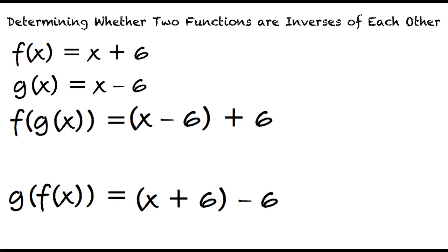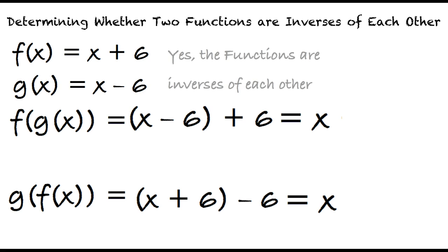To find out whether these functions are inverses of each other, we need to simplify each equation. Negative 6 plus 6 and 6 minus 6 both equal 0. So f of g of x equals x, and g of f of x also equals x. Since both compositions are equal to x, the two functions are inverses of each other.